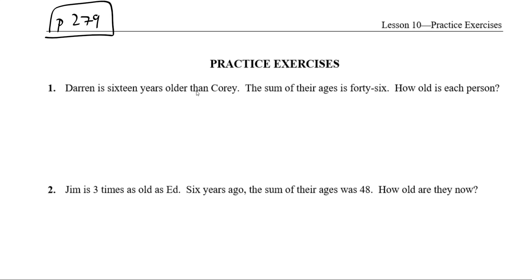Darren is 16 years older than Corey, so one piece of information that we know. And another piece of information we know is that the sum of their ages is 46. That first piece of information, Darren is 16 years older than Corey, and the second piece of information, the sum of their ages is 46.